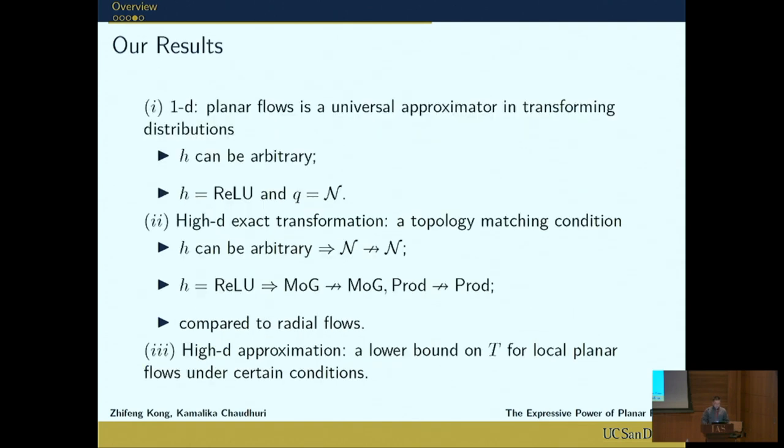So instead of looking at F, we directly look at the input-output distribution pairs. And here are our results. For the one-dimensional case, we show that planar flows is a universal approximator in transforming distributions. When a non-linearity h can be arbitrary, the proof is trivial. When we restrict it to the ReLU and the input distribution is a Gaussian, the conclusion still holds and the proof is not trivial.